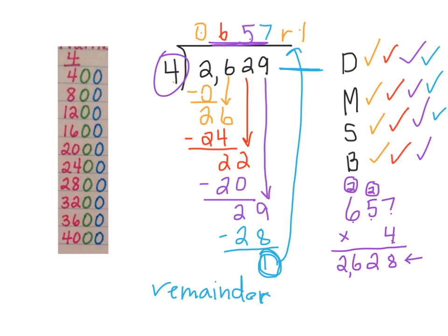And I have 2,628. But that's not what you started with. You started with 2,629. Ah, yes, because there is a remainder of 1. So I add in the remainder. I multiplied up here. This part I had to multiply. The remainder I have to add.